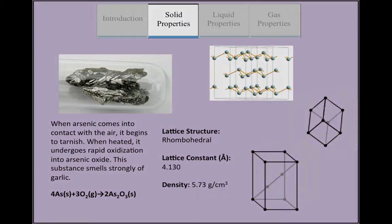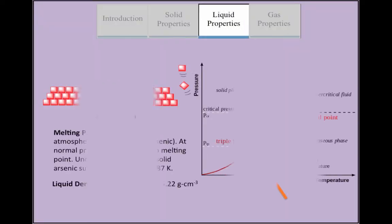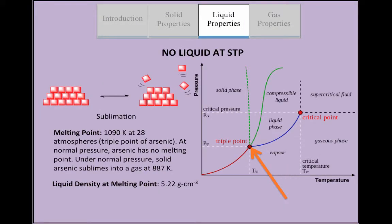When heated, arsenic sublimes. However, at 28 times the standard atmospheric pressure, arsenic melts at a temperature of 1090 Kelvin.